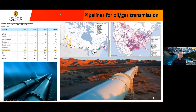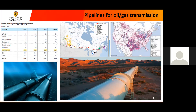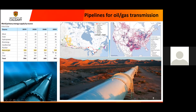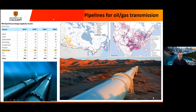Pipelines have played an important role in transportation of oil and gas. Even as we target energy transition and net zero by 2050, natural gas can still play an important role in energy. We still need oil, so pipelines will continue to play an important role for oil and gas transmission.